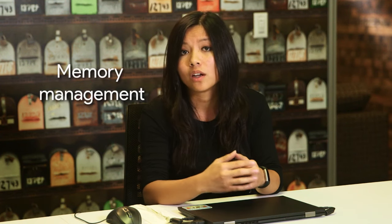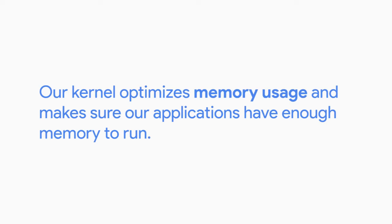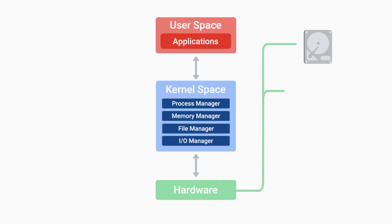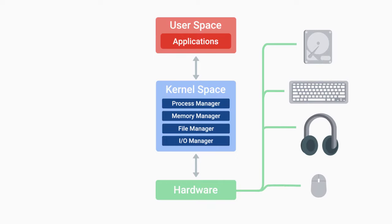Next up is memory management. Our kernel optimizes memory usage and makes sure our applications have enough memory to run. The last important function that a kernel performs is input-output, or I/O management. This is how our kernel talks to external devices like disks, keyboards, networks, connections, audio devices, and more. I/O management is anything that can give us input or that we can use for output of data.